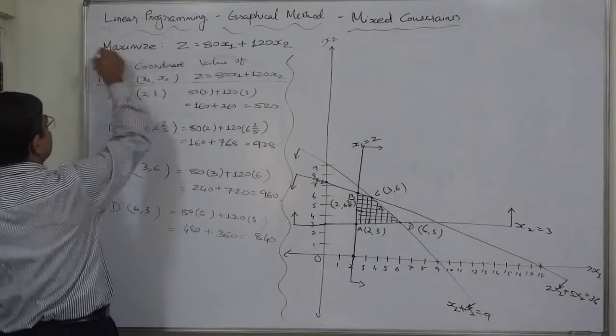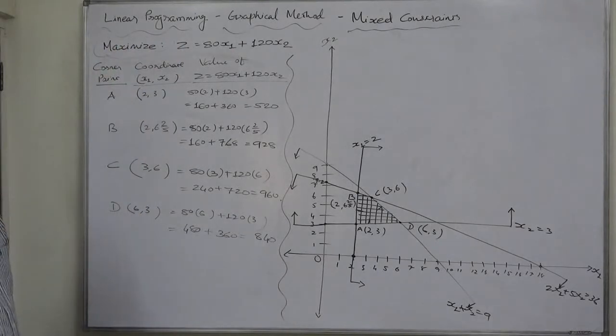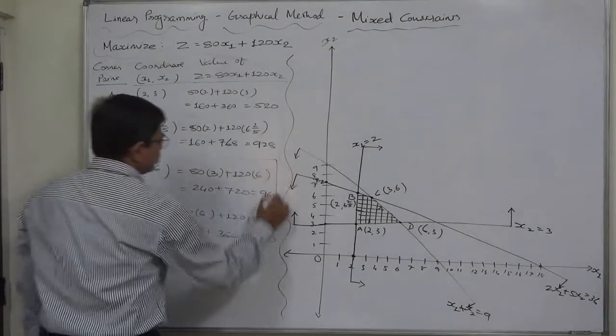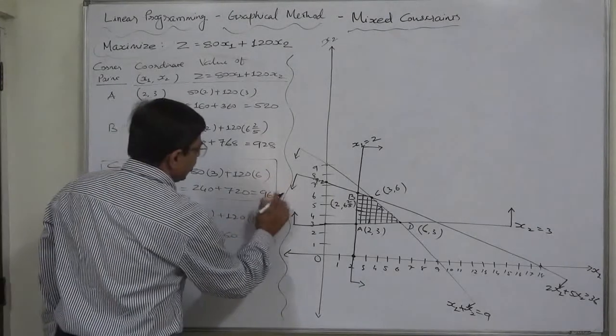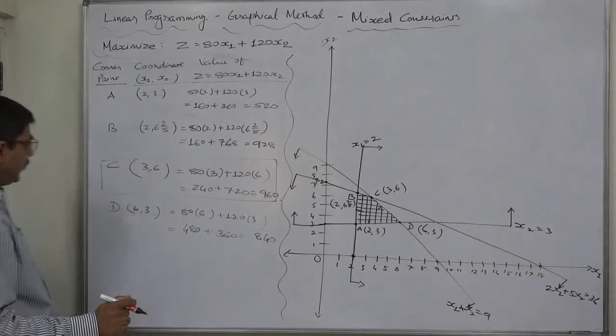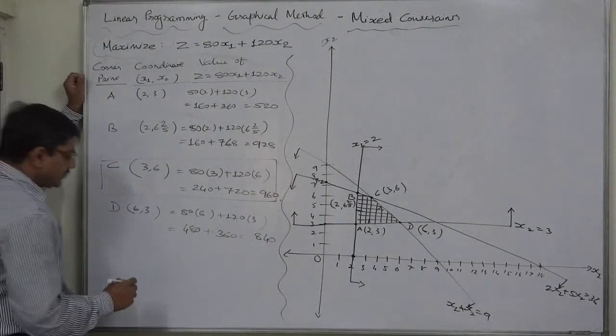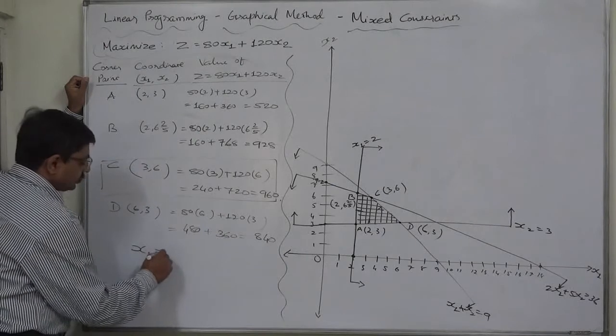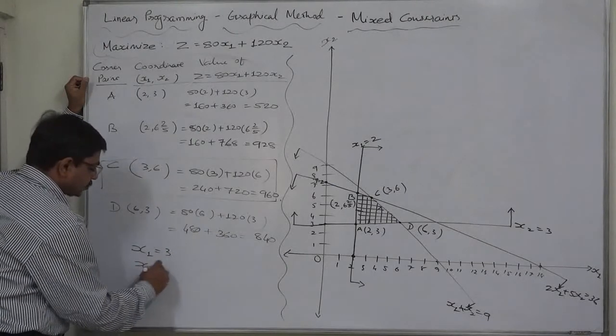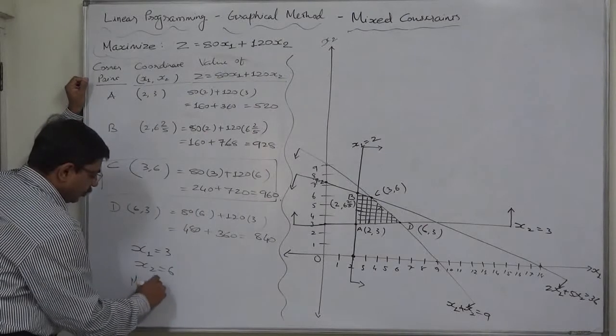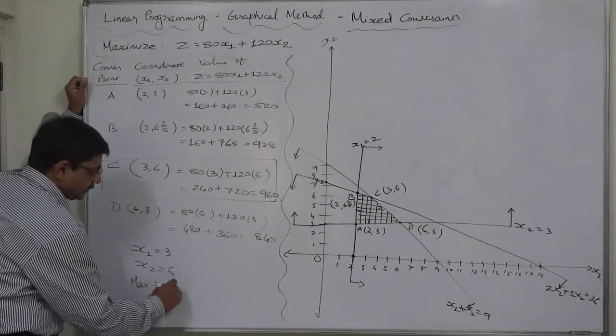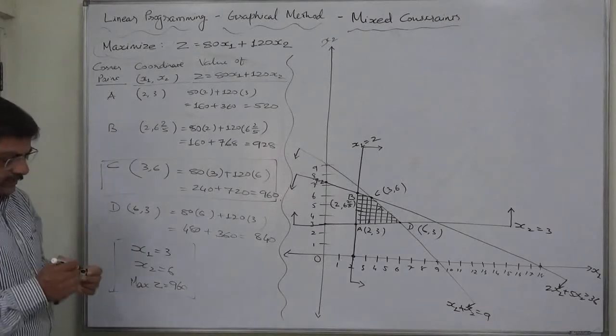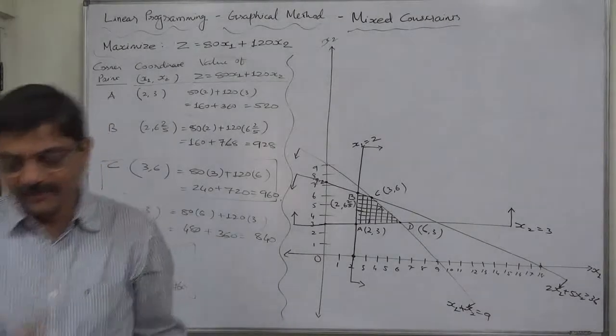The objective is to maximize. That means we need to select the maximum value of the objective function that is 960 at corner point C. The coordinates are 3 and 6. And that means the optimal solution is X1 equals to 3, X2 equals to 6, and maximum value of Z at this point is 960. That's it. Thank you very much.